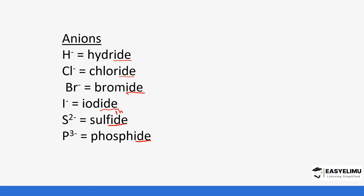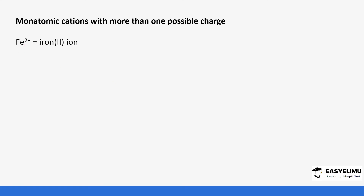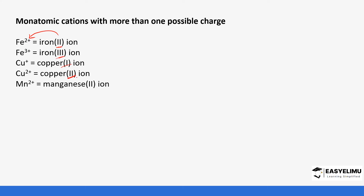What about cations that form more than one ion - basically the ones in the transitional elements? When naming these, we put the charge or valency or oxidation number in brackets. So iron(II) ion - you put the two in brackets, which represents the charge or valency. Iron(III) ion - we put three. Copper(I) ion, copper(II) ion, manganese(II) ion, manganese(III) ion, lead(II) ion, and lead(IV) ion.